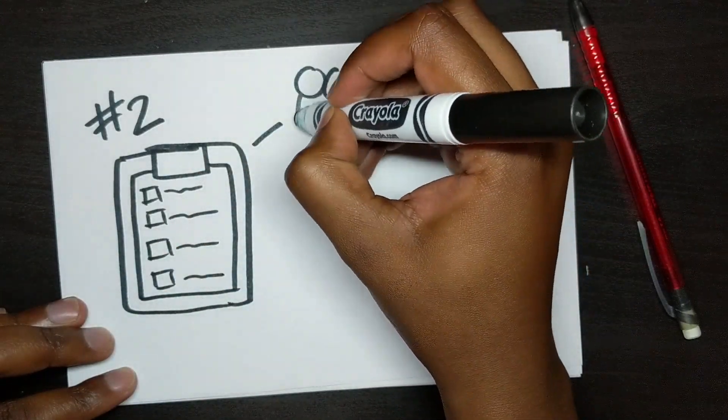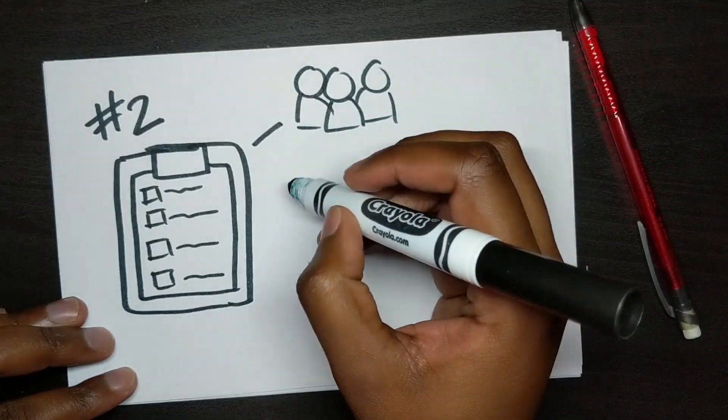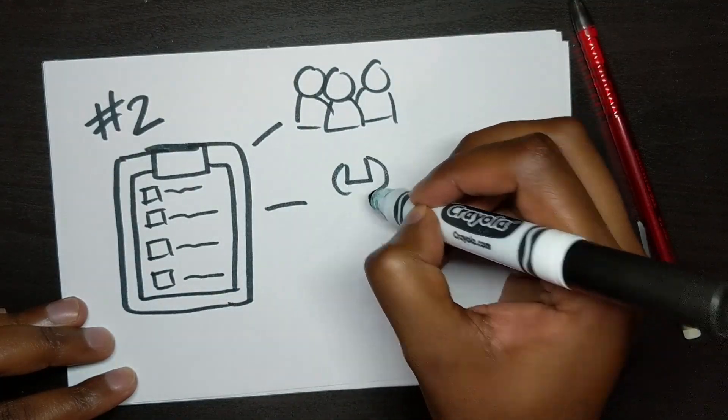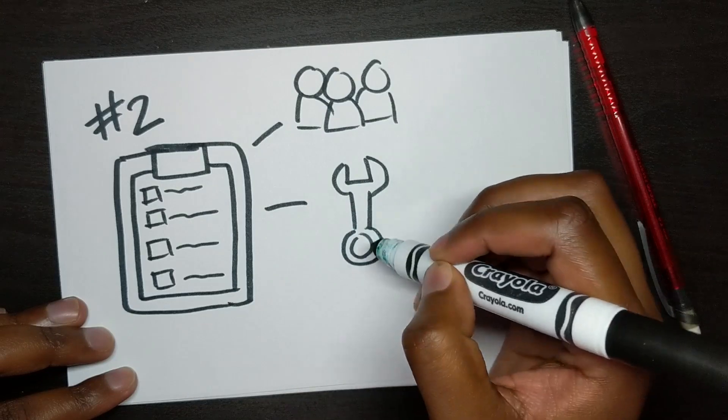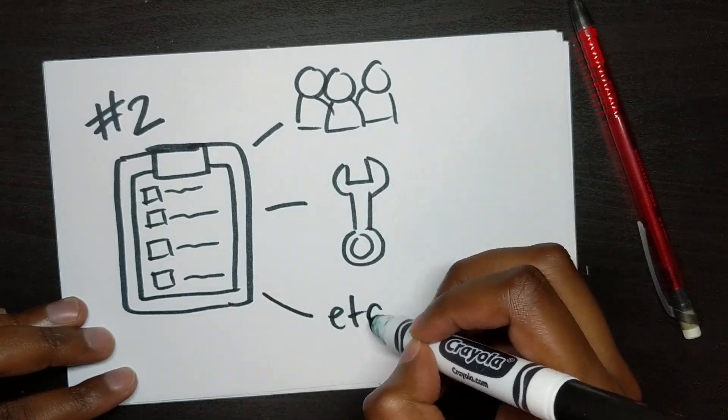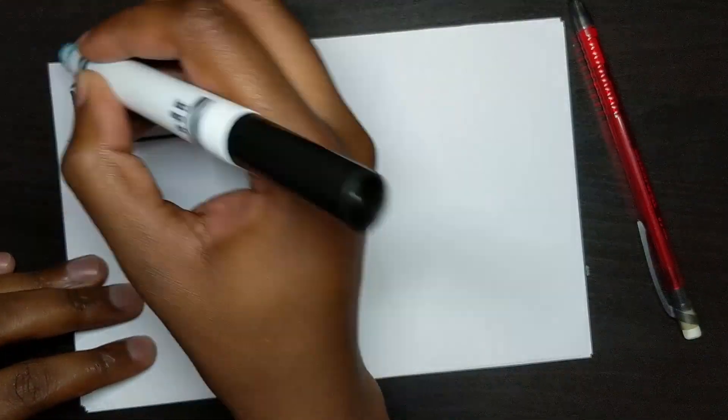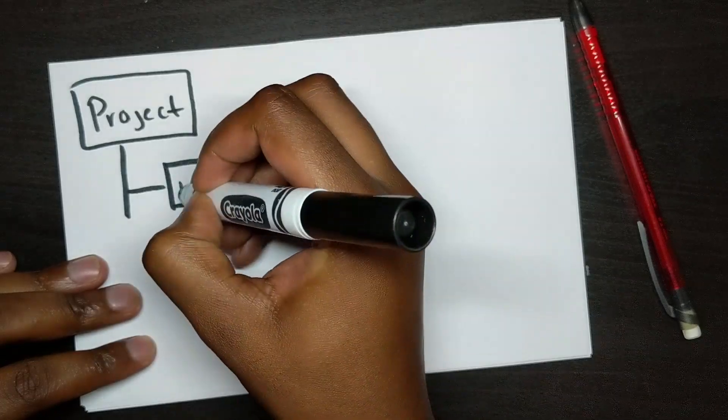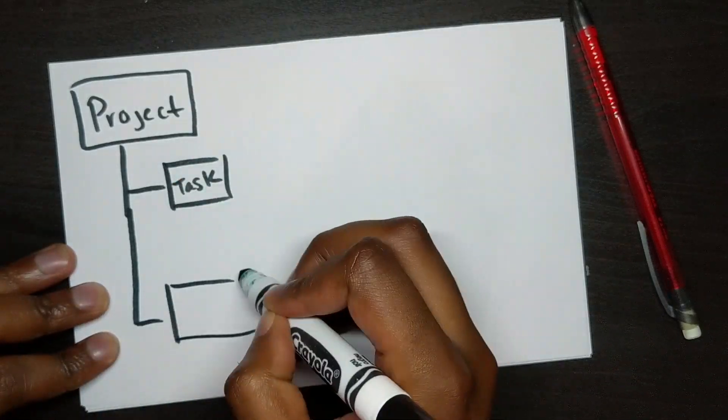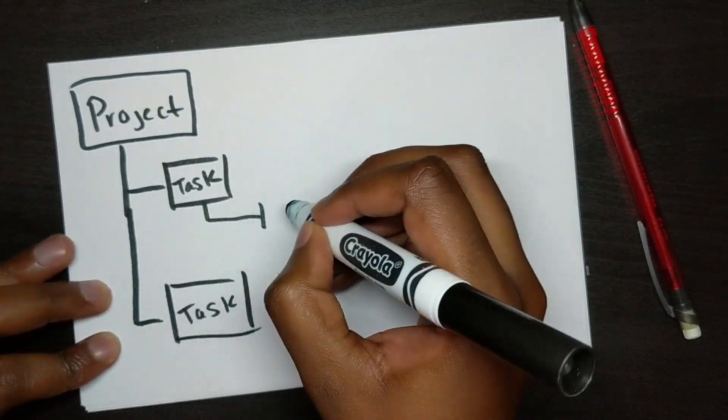It prepares everyone involved and also ensures that they have the right resources, like the people, the tools, the facilities that might be needed for all the sessions. This becomes especially important if you are a contractor, where a statement of work might be required. The common deliverables here are a work breakdown structure, communication plan, business analysis approach.